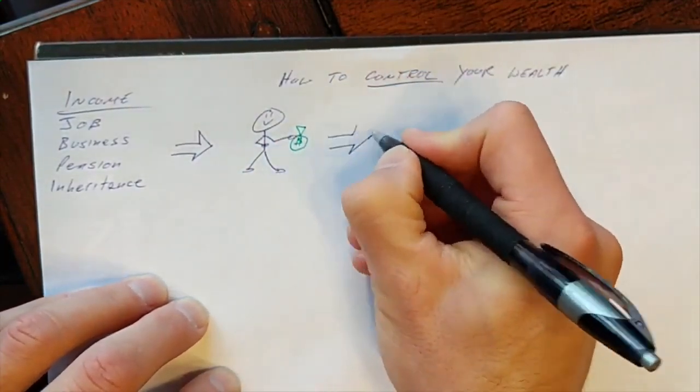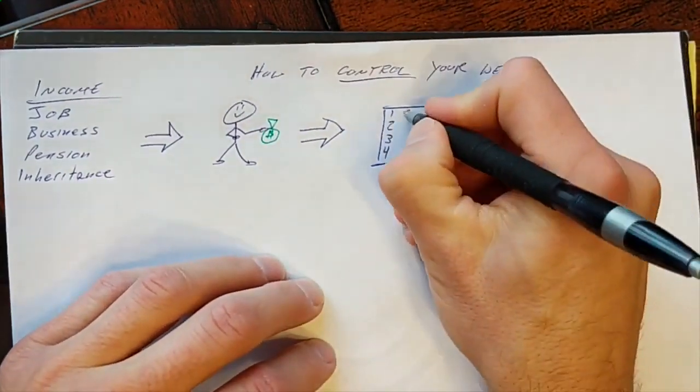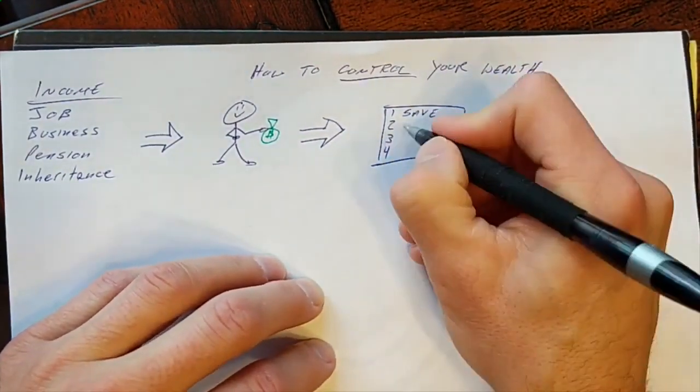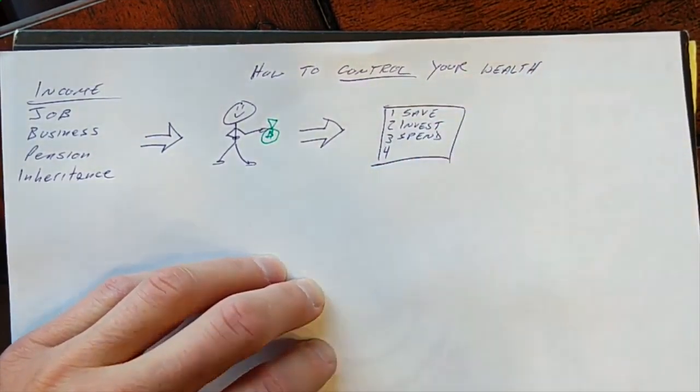Now, when you get that paycheck, there's really only four things you can do with it. You can save it, you can invest it, you can spend it, or you can give it.